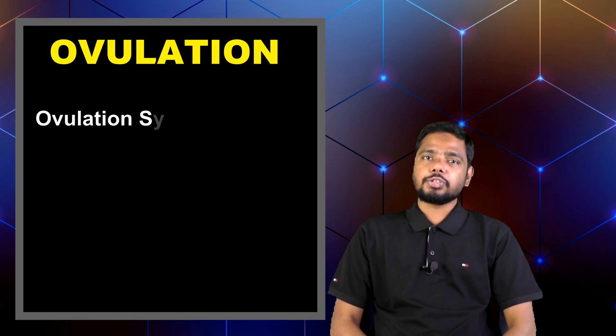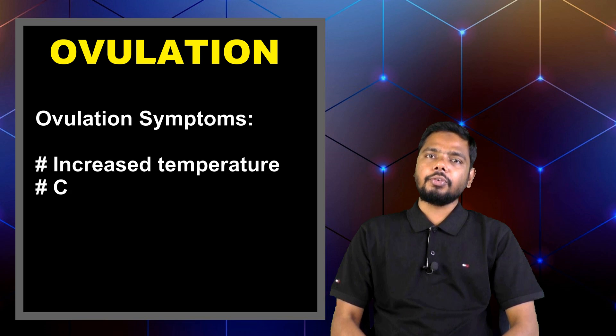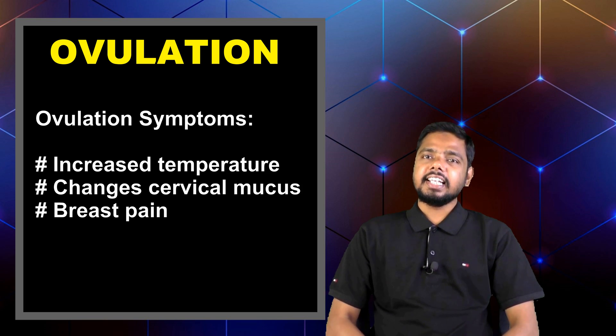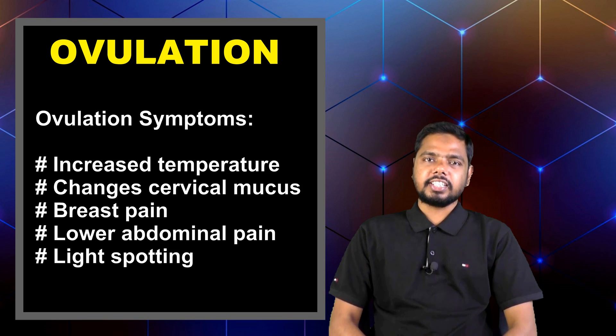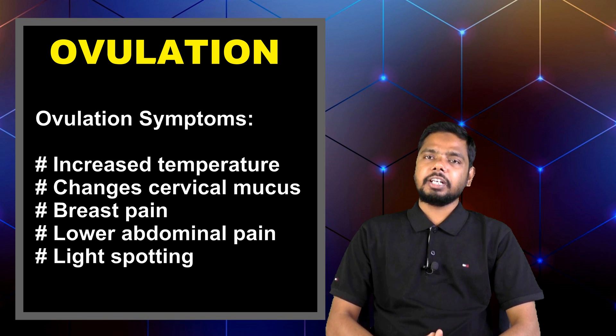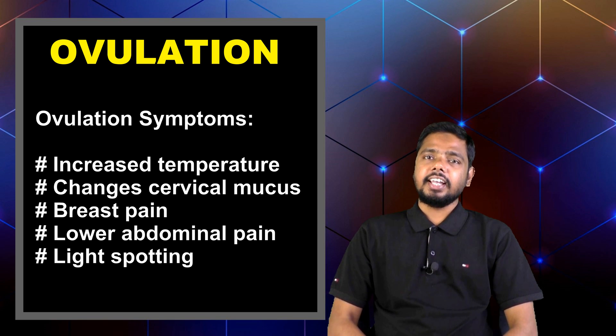Women experience a few common symptoms during their ovulation and menstruation time. The most common symptoms of ovulation are increased body temperature, changes in cervical mucus, breast pain, lower abdomen pain, and light spotting.